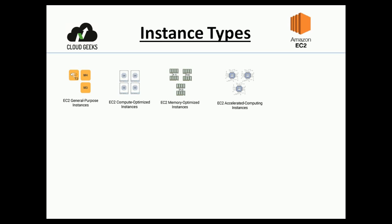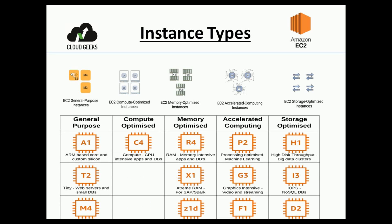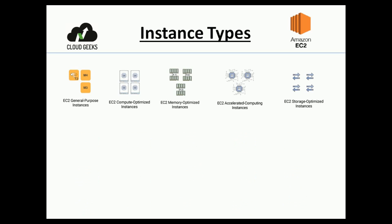The fourth one is accelerated computing. If you are working with a very powerful application where too much compute power and an extra boost is required, you should go with the accelerated computing instance. Some examples include high-end gaming servers. The fifth is the EC2 storage optimized instance — if you want to store a high amount of data where IOPS, which is input/output operations per second, reaches hundreds of thousands, you should go with storage optimized.